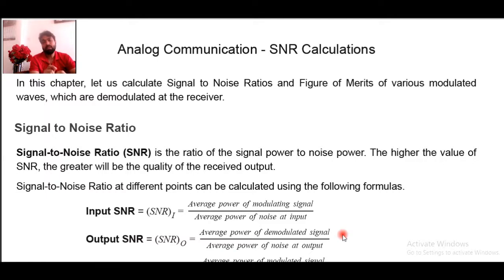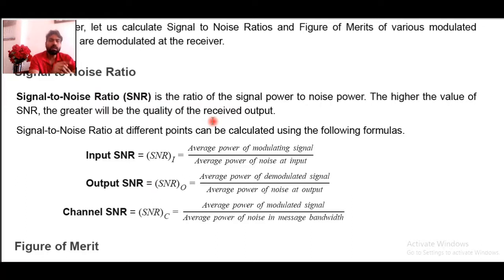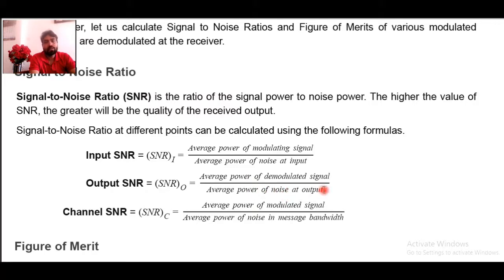The channel should be able to recognize the signal easily without using excessive power and without losing information. This is the basic criteria. The third category is channel SNR, which is also very important. Noise may come at the input side from the transmitter — external and internal noises such as electron movement, thermal noise, and other causes exist at the transmitter side. Similarly, internal and external noises may also be present at the receiver. The channel SNR is important to determine whether the transmission medium is trustworthy.